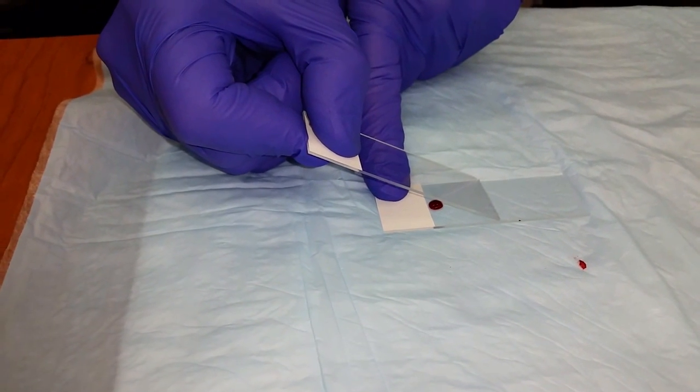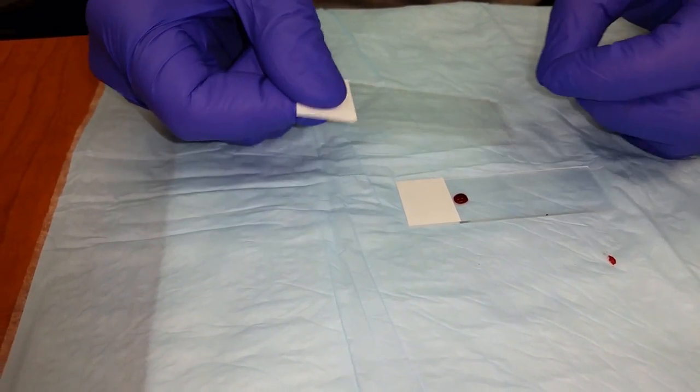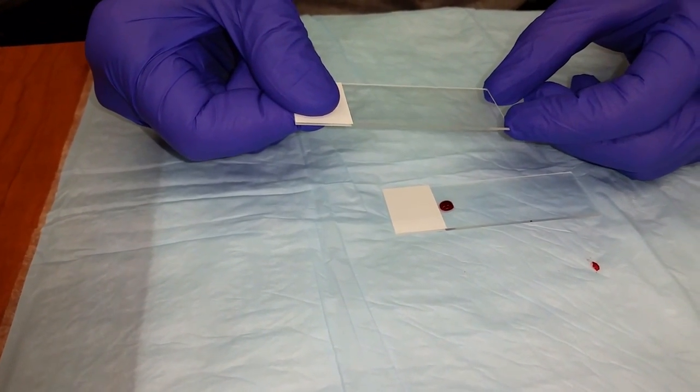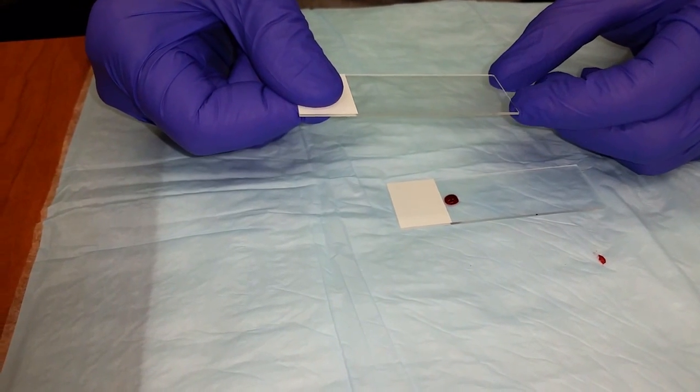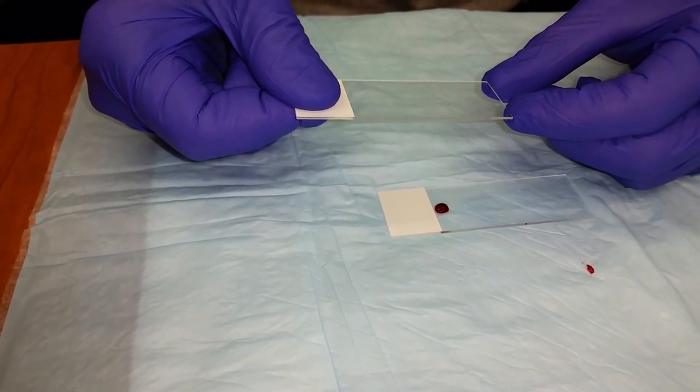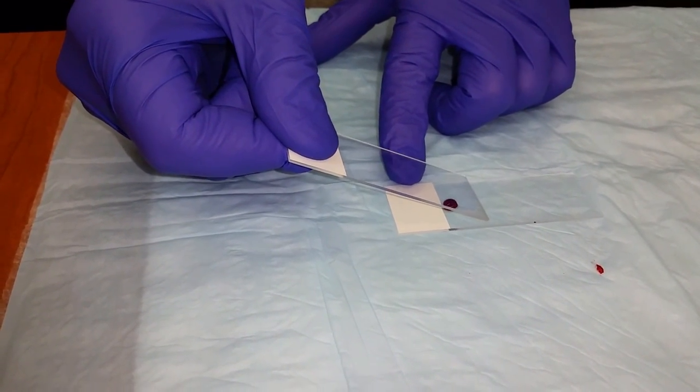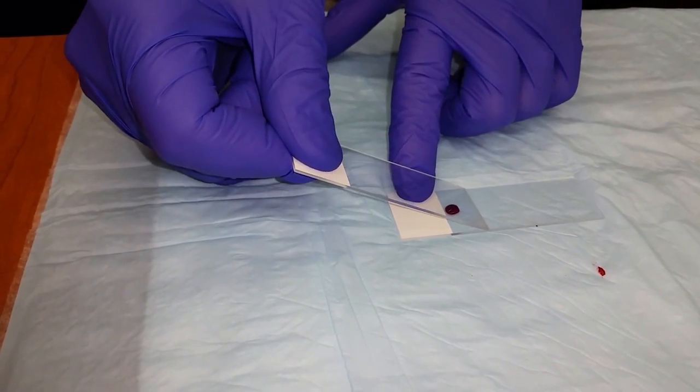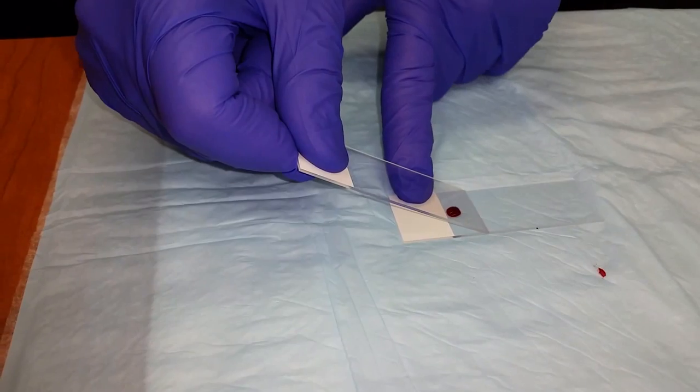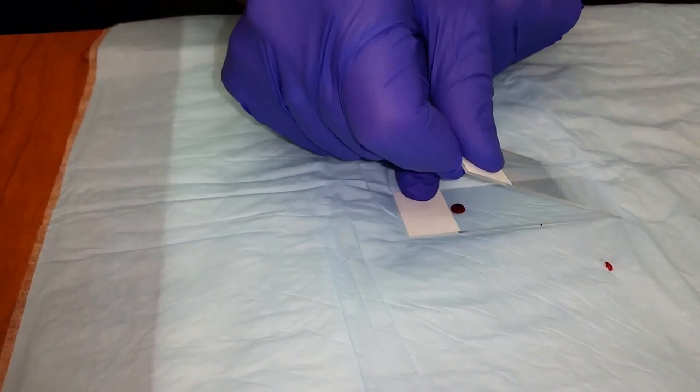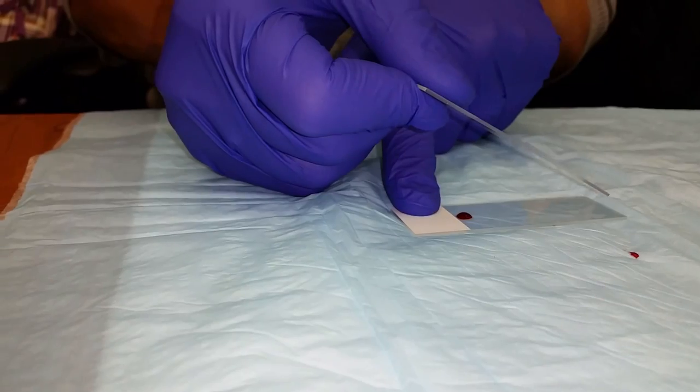And when you reach the drop of blood, you will see that the drop of blood will start to spread along the bottom of the slide. When it's spread to almost the entire width of the spreader slide, you are going to, in one steady, quick motion, keeping the spreader slide flush against the bottom slide, bring the spreader slide all the way to the end of the bottom slide.